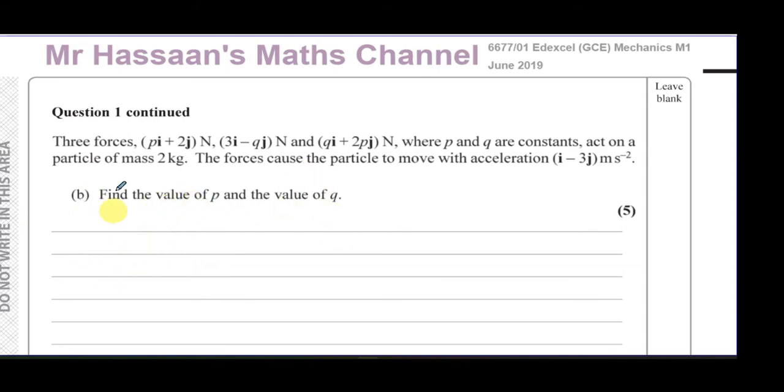So that old video now is going to be probably gone, edited, and this will replace it. Here we have three forces (pi + 2j) N, (3i - qj) N, and (qi + 2pj) N, where p and q are constants. They act on a particle of mass 2 kg. The forces cause the particle to move with acceleration (i - 3j) m/s². Find the value of p and the value of q.